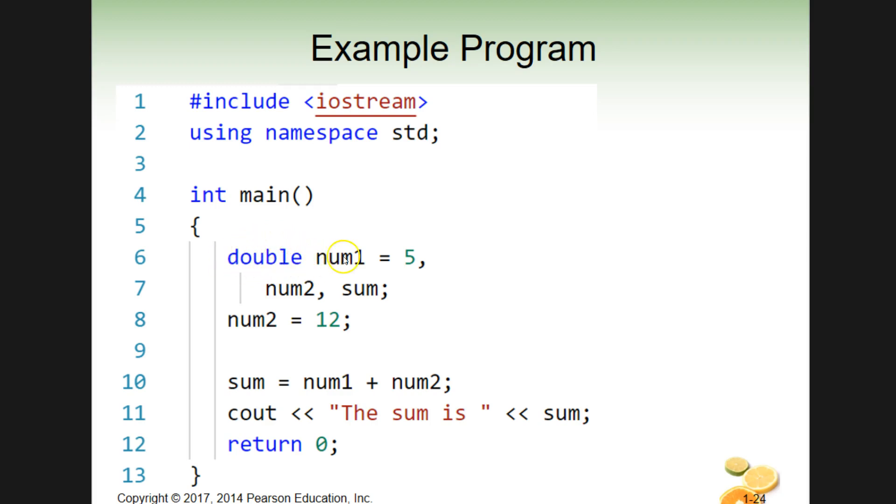We're saying, hey, we want to store this. This is a variable name, num1 equals five. We're saying that equals five. We're also declaring num2 and sum as a double and then ending it with this punctuation semicolon.